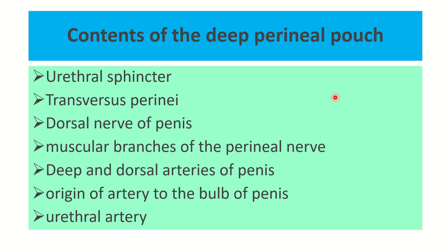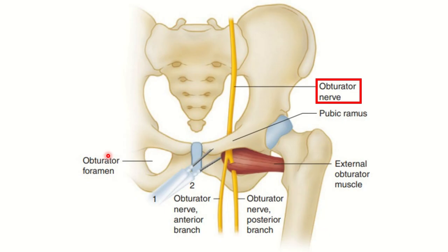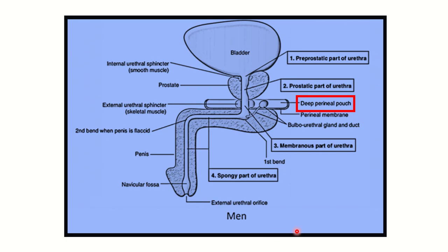The contents of the deep perineal pouch are: the urethral sphincter, transverse perinei muscle, dorsal nerve of the penis, muscular branches of the perineal nerve, deep and dorsal arteries of the penis, the artery to the bulb of the penis, and the urethral artery.